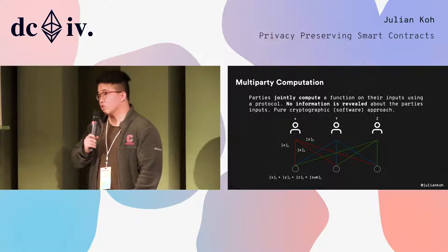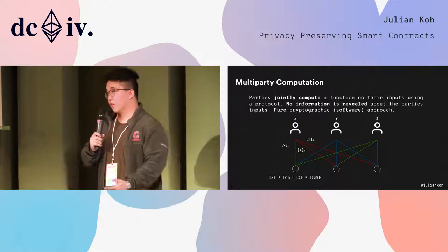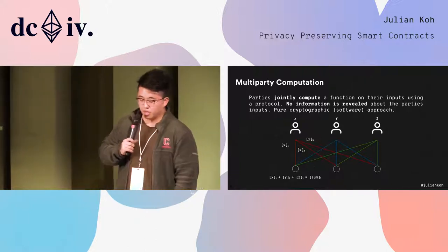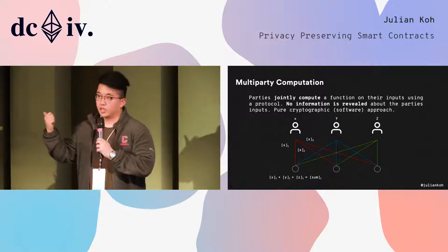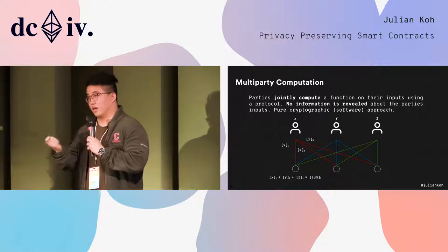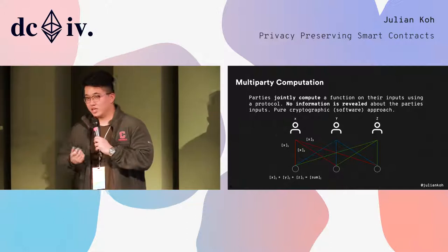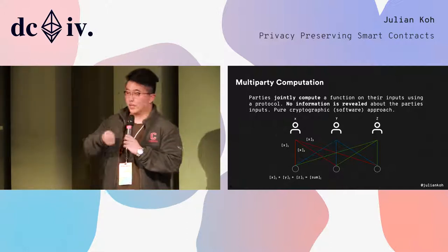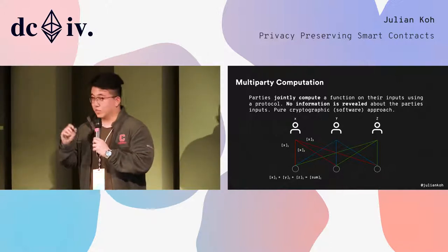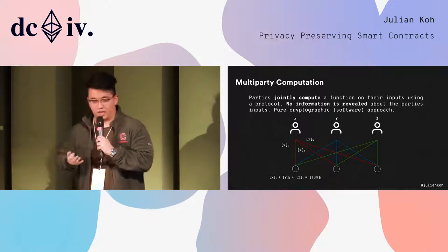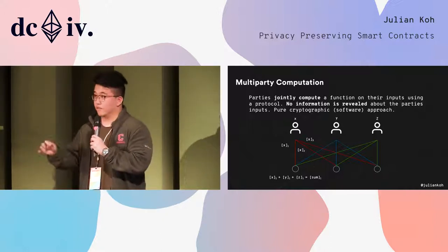The second one is quite interesting — it's a cryptographic method, not hardware at all. It's called MPC; some of you may have heard of it. Let's say there are three people X, Y, Z who want to compute the sum of their numbers, but each of them doesn't want to reveal their actual number. What person X can do is use a linear secret sharing scheme — break down his input X into three pieces, X1, X2, and X3, and send these to three different nodes.